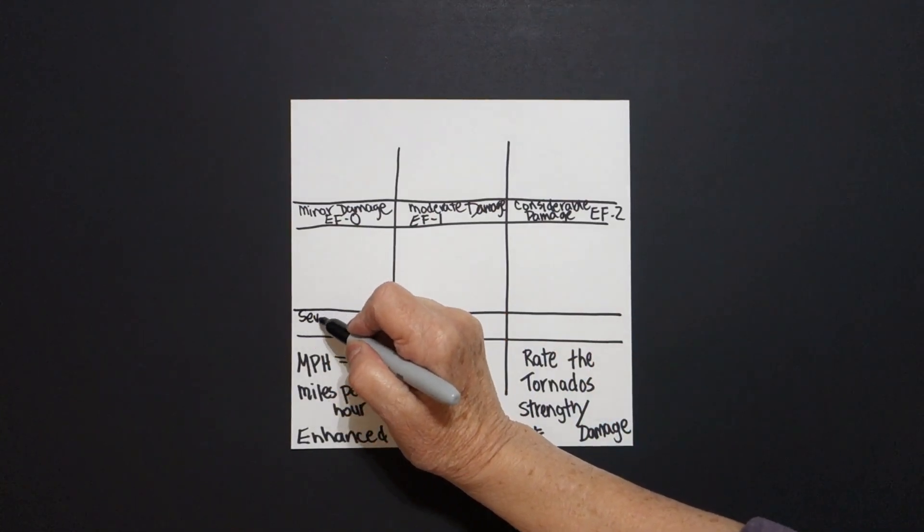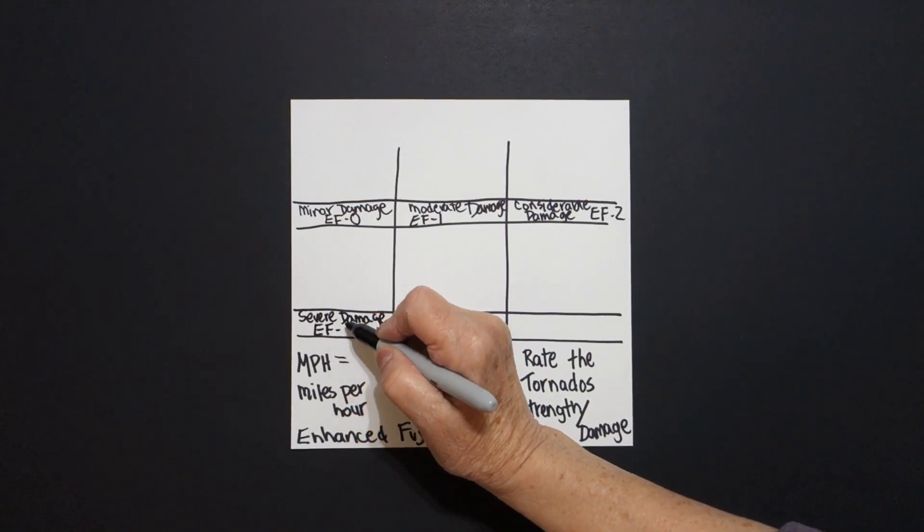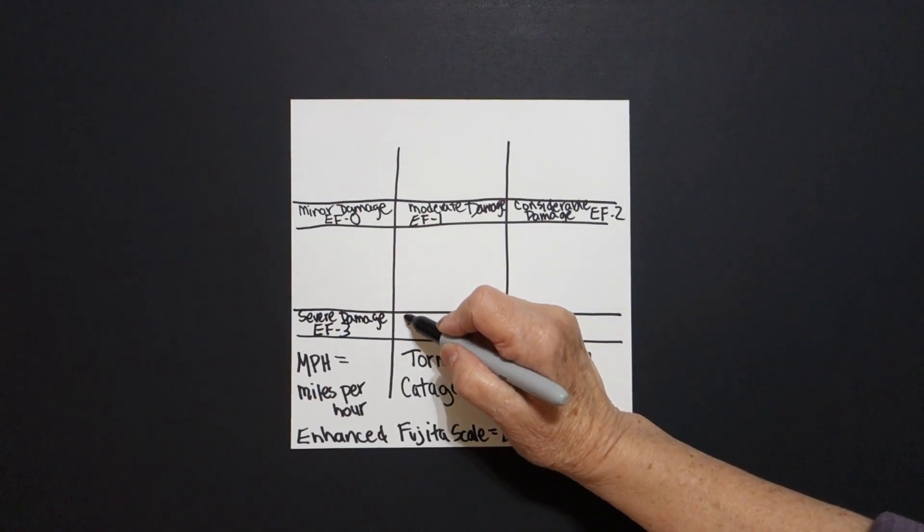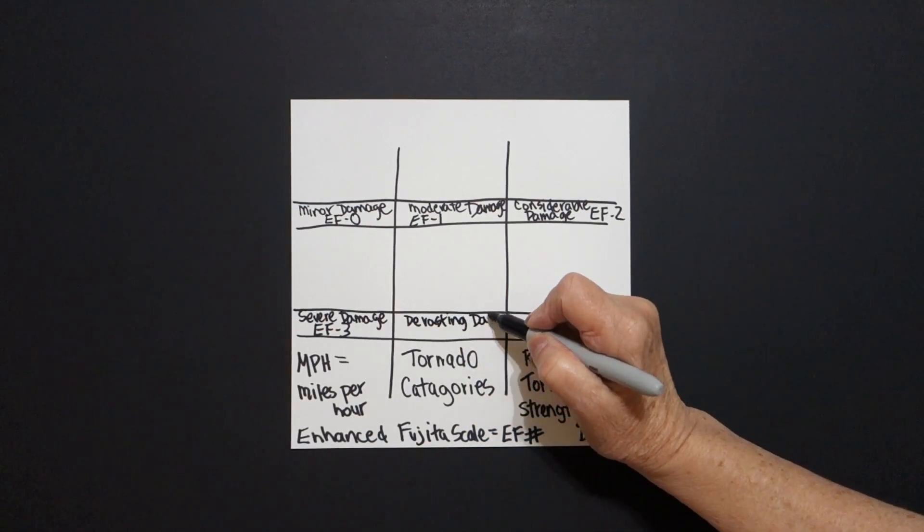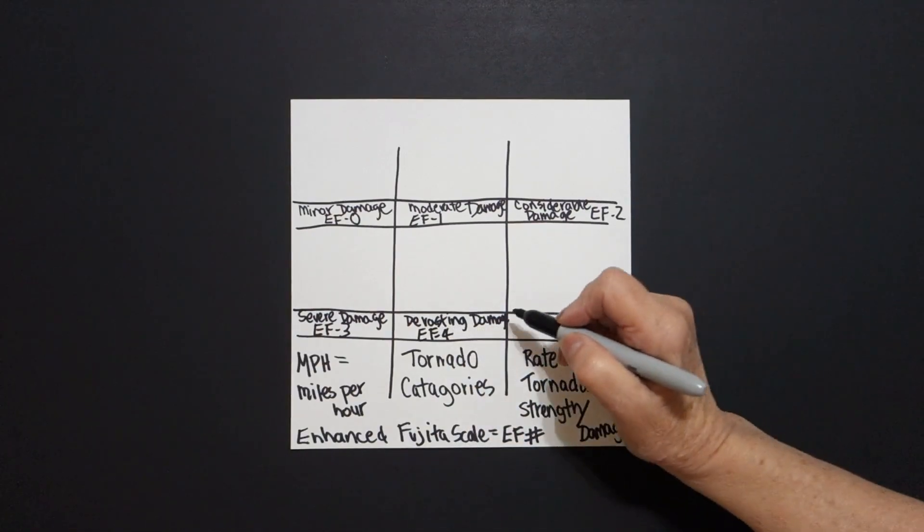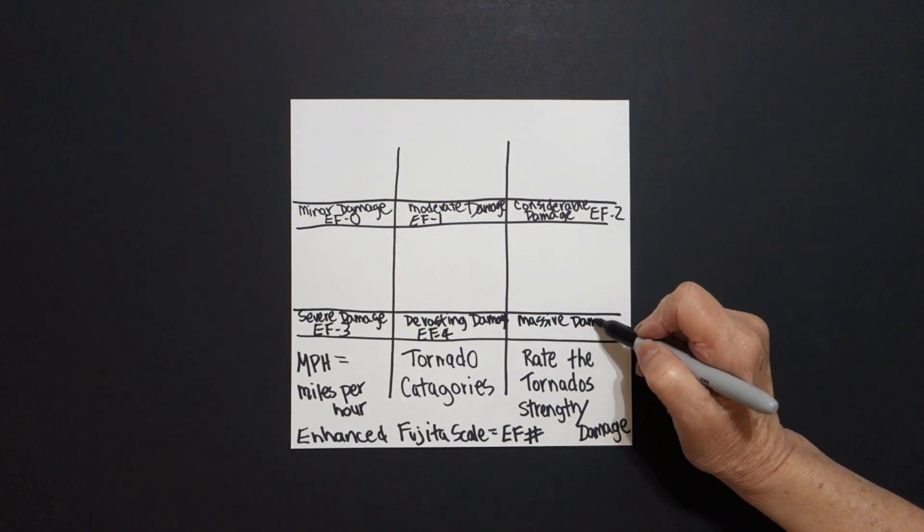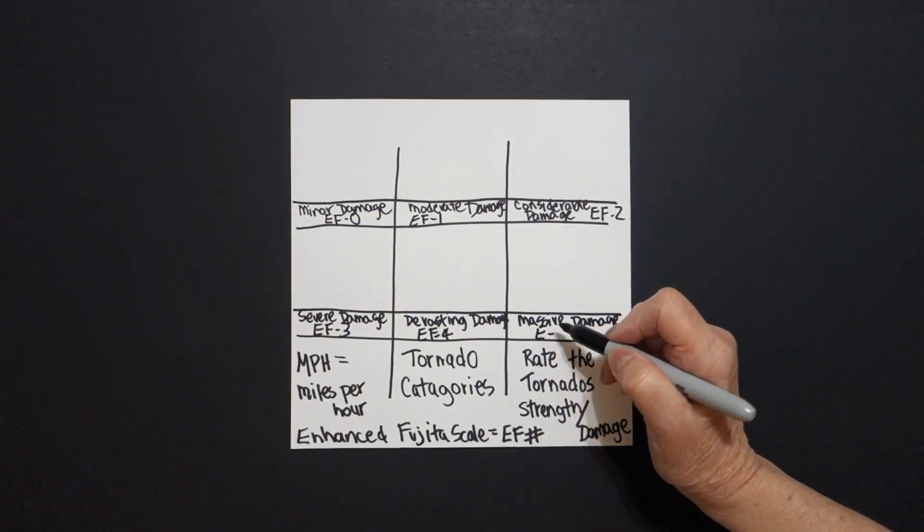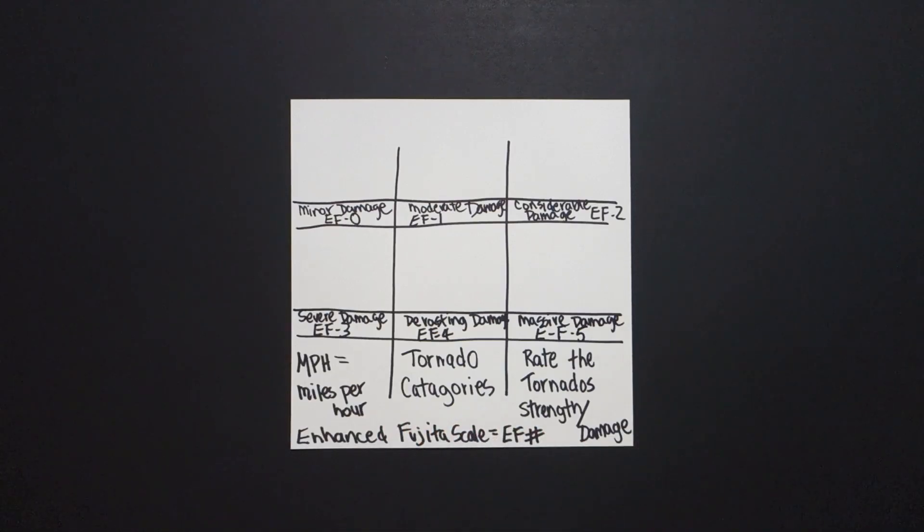If it is severe damage, you are experiencing an EF3 tornado. If it is devastating damage, that now becomes an EF4. And if it is massive tornado damage, that is an EF5. This was figured out by Ted Fujita in 1971. He developed this in order based on the damage left behind by a tornado.